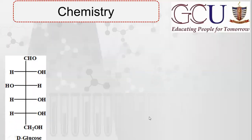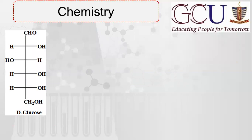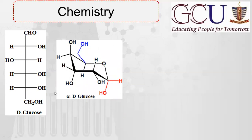इस test की chemistry क्या है — हमारे पास carbohydrate है, हमने alpha-D-glucose लिया है. इसमें 6 carbon हैं, एक end पे CH₂OH group है, दूसरे end पे aldehyde group है, और बाकी सारे carbons के साथ OH लगे हैं. यह aldose sugar है. इसकी cyclic structure alpha-D-glucose है. अब जब हम इसमें sulfuric acid डालते हैं जो कि बहुत अच्छा dehydrating agent है.